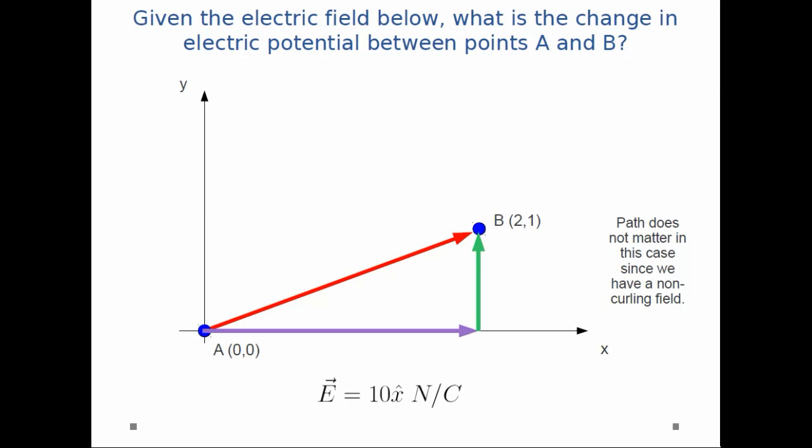Path does not actually matter in this case since we have a non-curling field. What that means is, in this class, as long as your field is not spinning around and around, you can choose any path you want and you'll get the same answer.